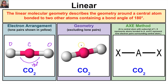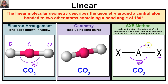Looking at the AXE method, where A is the central atom, X represents atoms bonded to A, and E represents lone pairs of electrons surrounding the central atom — with linear geometry we don't have any lone electron pairs surrounding the central atom. We have two atoms, typically the same, bonded to the central atom. Because those electrons are negative, they push themselves to the furthest possible distances, resulting in bond angles of 180 degrees.